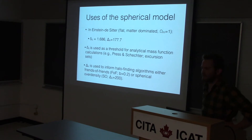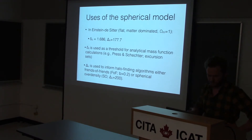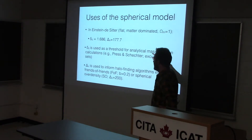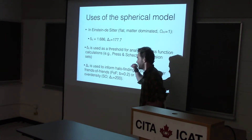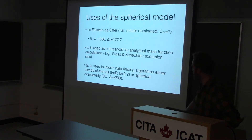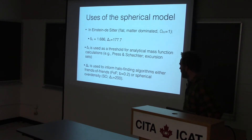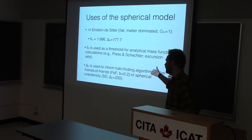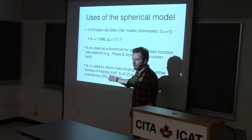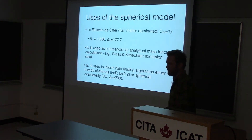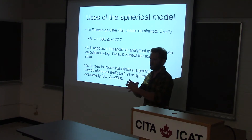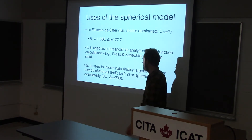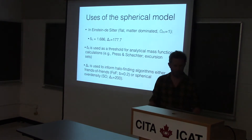Where do these numbers matter in cosmology and how can we use them? Delta_C is used in analytical mass function calculations — for example, the Press–Schechter formalism and excursion set approaches to deriving the mass function, which tells you how many halos of a certain mass you expect. Delta_V, the number that's 177, is used to inform halo-finding algorithms. Because people think 177.7 is roughly 200, the value 200 is often used to identify halos in N-body simulations — you find over-dense regions and put a sphere around them until that sphere encloses 200 times the mean density.